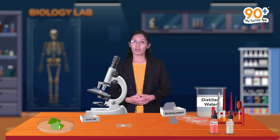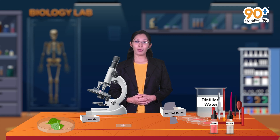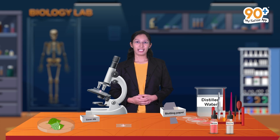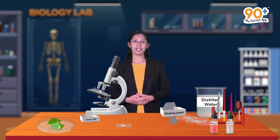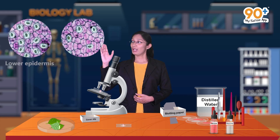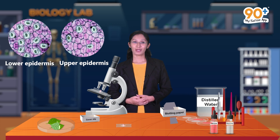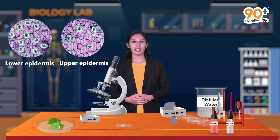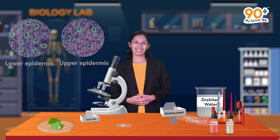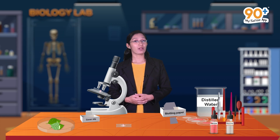Now we have found the stomatal indices of both the upper and lower epidermis. The major observation is that the number of stomata is more in the lower epidermis and only a few stomata are present in the upper epidermis. Hence, through this experiment we have understood that stomatal distribution in a petunia leaf is more on its lower surface.